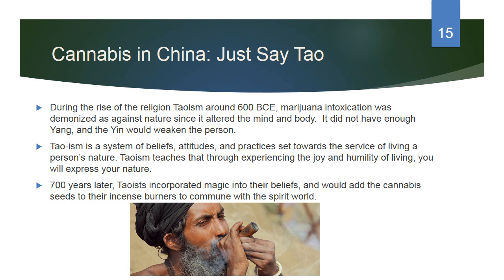Taoism is a system of beliefs, attitudes, and practices set toward living according to a person's authentic nature — who you are, your authentic self. Taoism teaches that through experiencing the joy and humility of living you will express your authentic nature. However, 700 years later, Taoists incorporated magic into their beliefs and would add cannabis seeds to their incense burners to commune with the spirit world. So 600 years before Christ you see a movement against cannabis, then 700 years later it becomes part of religious ritual.